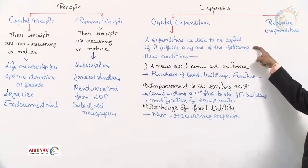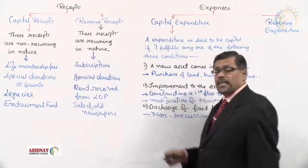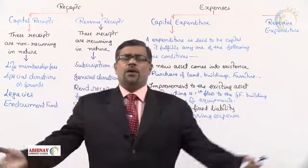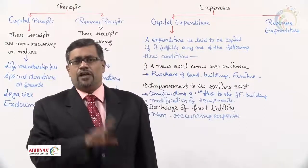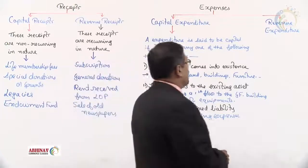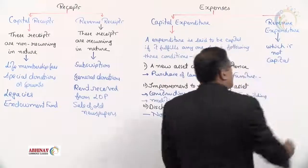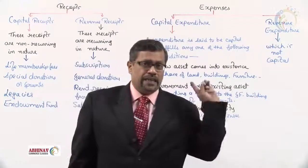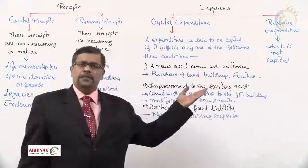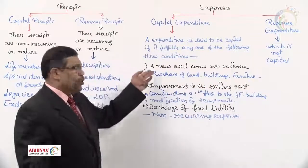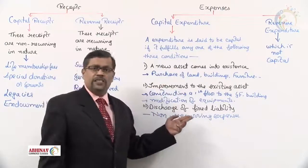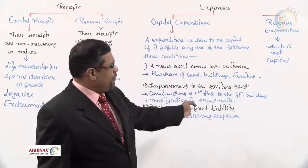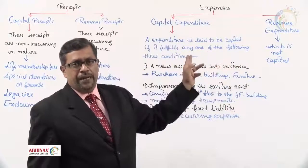An expenditure is said to be capital if it fulfills any one of the three conditions: a new asset comes into existence, improvement to the existing asset, or discharge of a fixed liability. What is revenue expenditure? Very simple — when expenditure comes to you, check if it is capital. If yes, take it as capital; if not, take it as revenue. When no new asset comes into existence, there is no improvement, and there is no discharge of fixed liability, it is revenue expenditure.